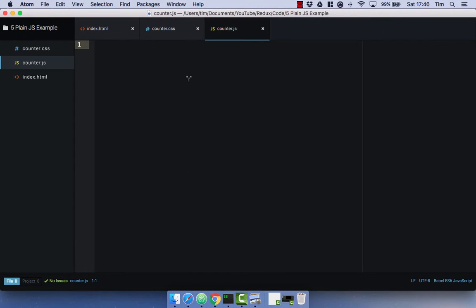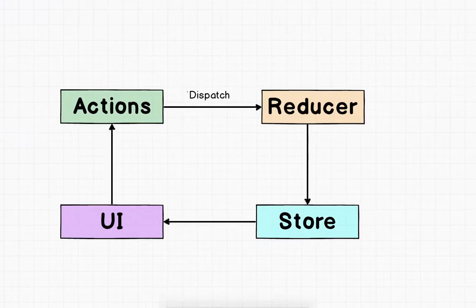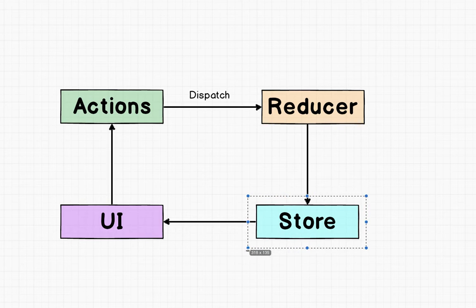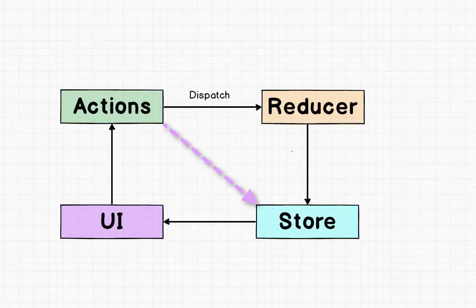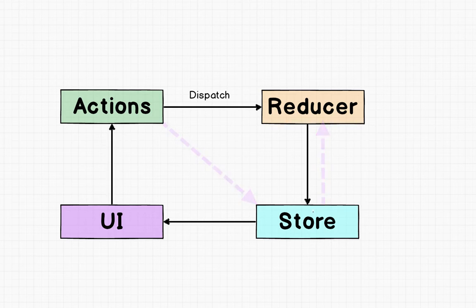In our counter.js, let's just recap what an action is. An action is just a JavaScript object that has a type. We're going to have a type of 'add', which is obviously going to add to our count. Actions are just payloads of information that send data from our application to our store. You'll notice in the diagram that our actions actually get sent to our reducer. What actually happens is in a Redux application, in our store, we have a reducer. So our reducer is within our store. So our actions get sent to our store, which has the reducer — they get sent to the reducer which is within the store. This action will actually get sent to the store, and from the store it will get sent to the reducer.